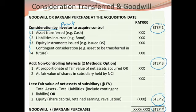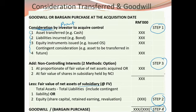For step two, the consideration transferred is compared with the fair value of net assets of the subsidiary on the date of acquisition. This includes total assets minus total liabilities, including contingent liabilities, plus equity share capital, retained earnings, and reserves on the date of acquisition.